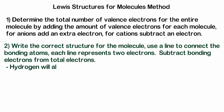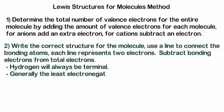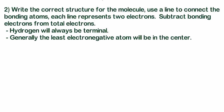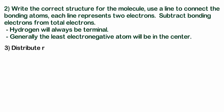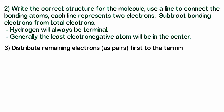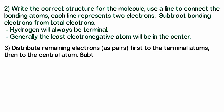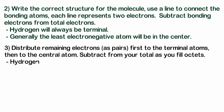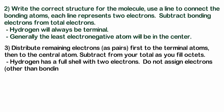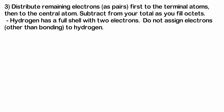A few notes on structure: hydrogen will always be terminal, and generally the least electronegative atom, other than hydrogen, will be in the center of the molecule. Step three: distribute remaining electrons in pairs, first to the terminal atoms, then to the central atom. Subtract each pair from your total as you fill octets in the molecule. Note that hydrogen has a full shell with only two electrons — do not assign electrons other than the bonding electrons to hydrogen.